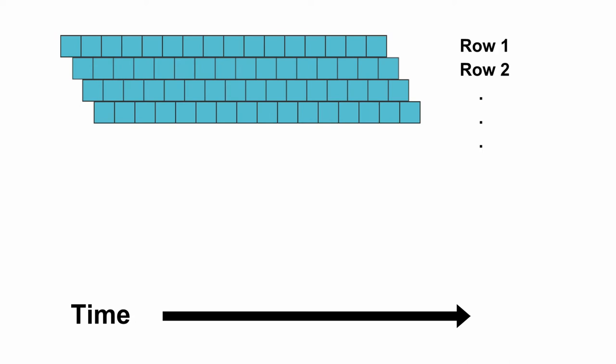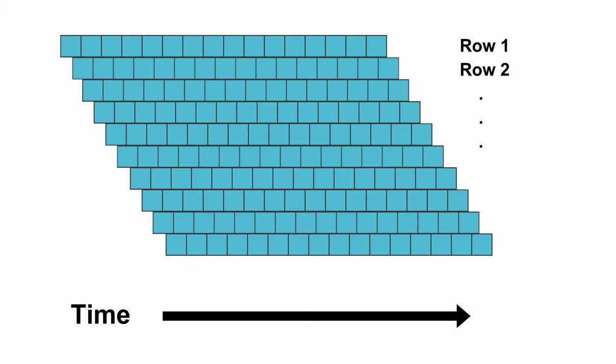Here is what the exposure timing might look like for the CMOS image sensor previously described. Each row is exposed at a time slightly later than the previous row. For this reason, it is called a rolling shutter.